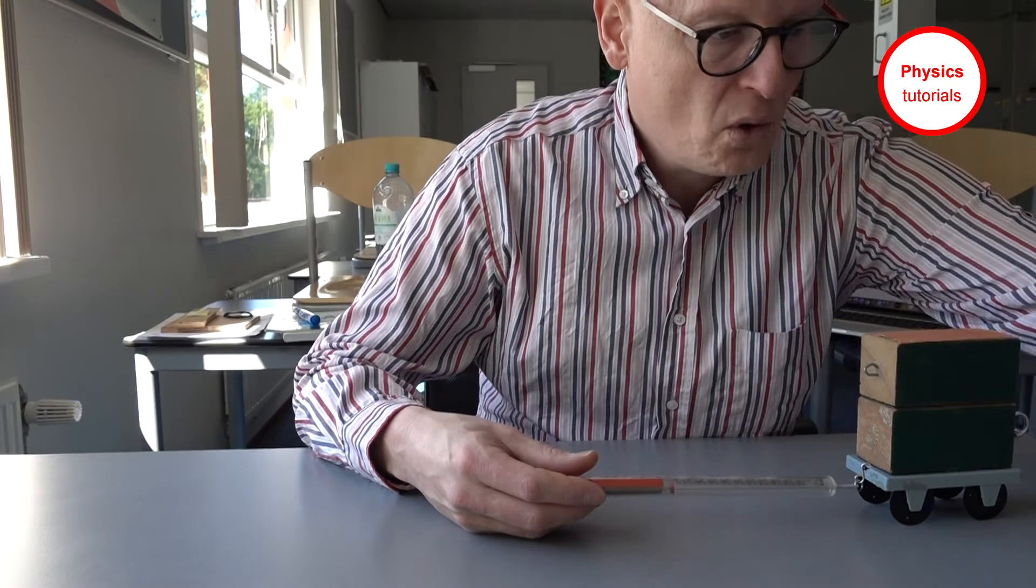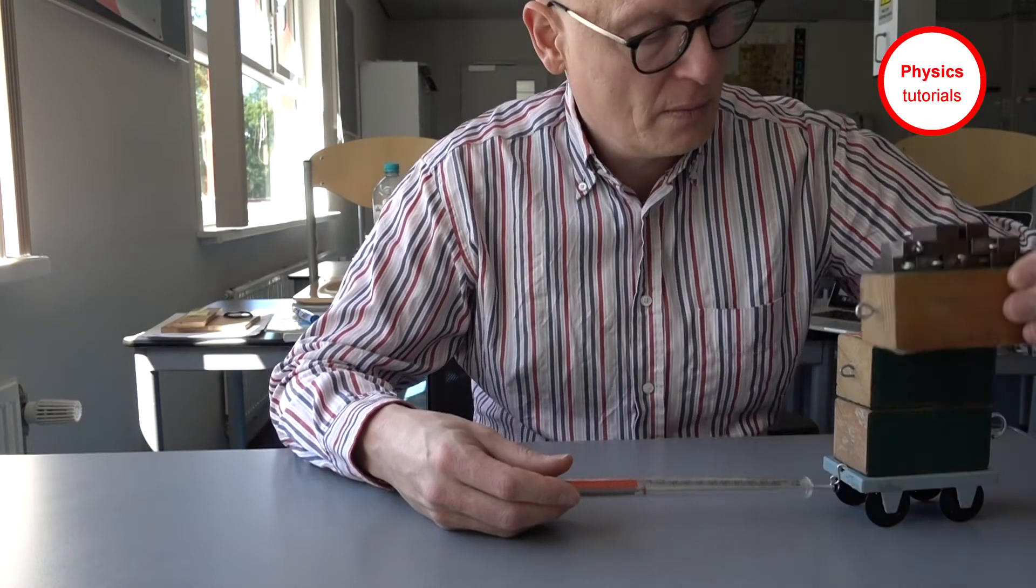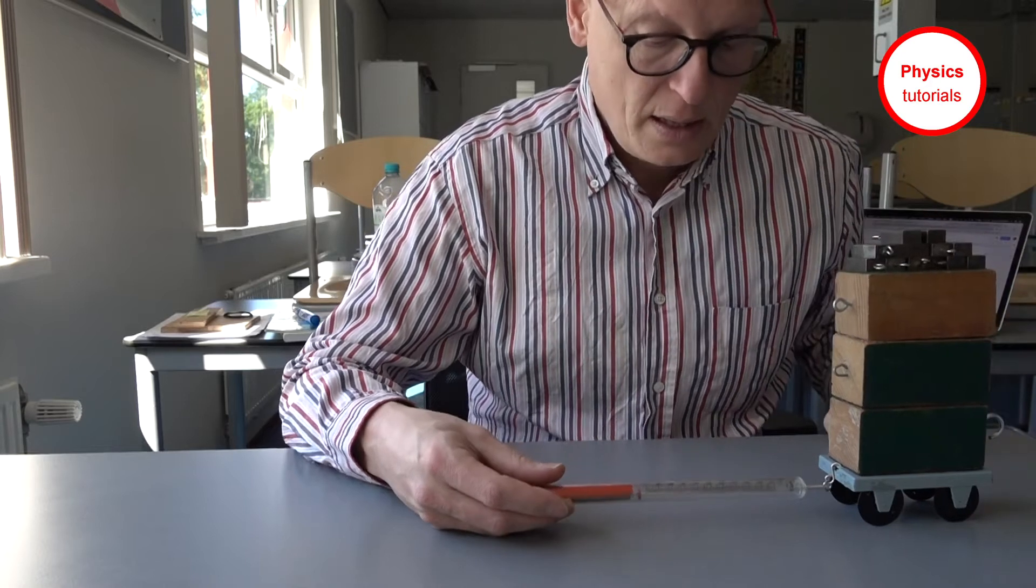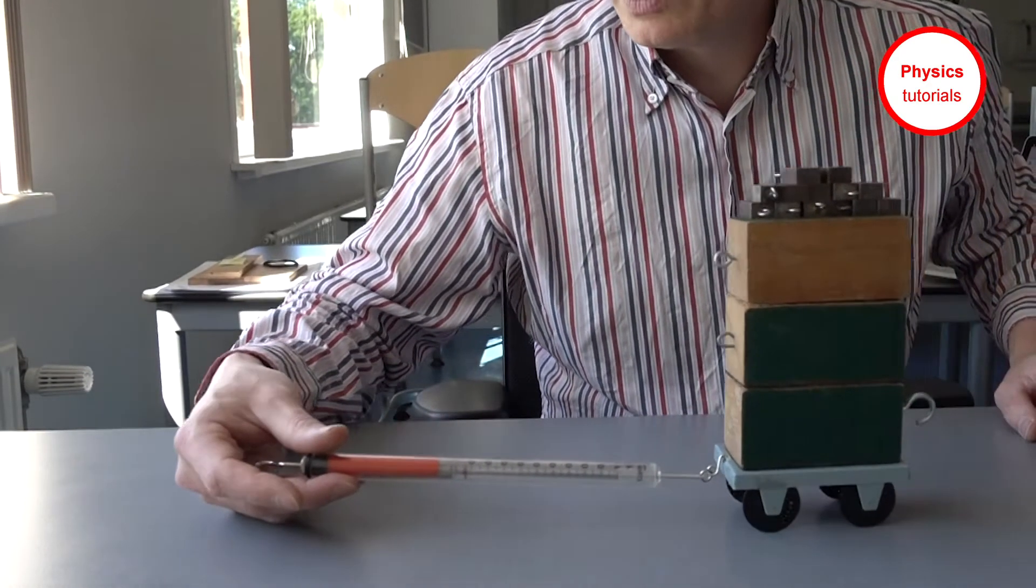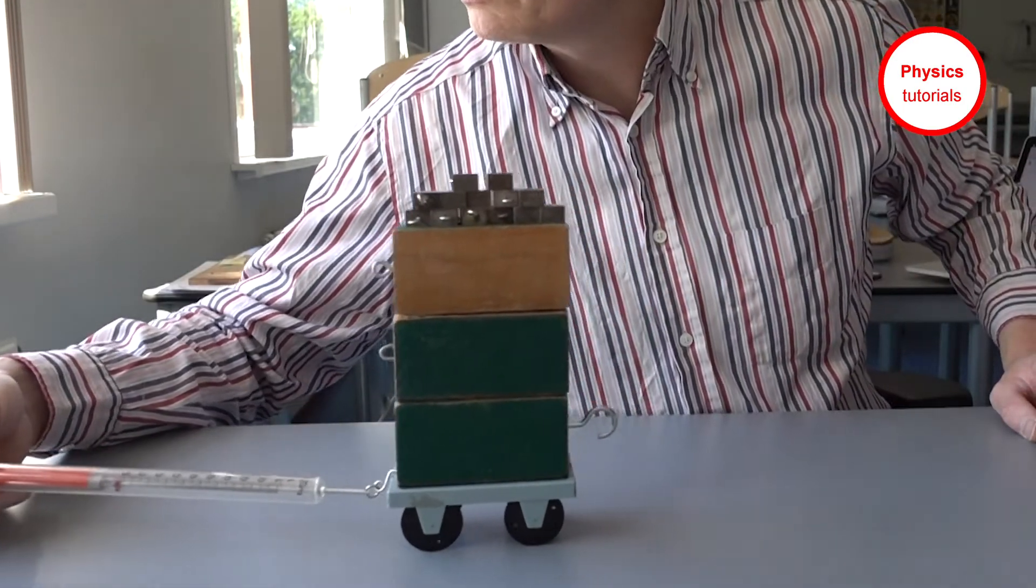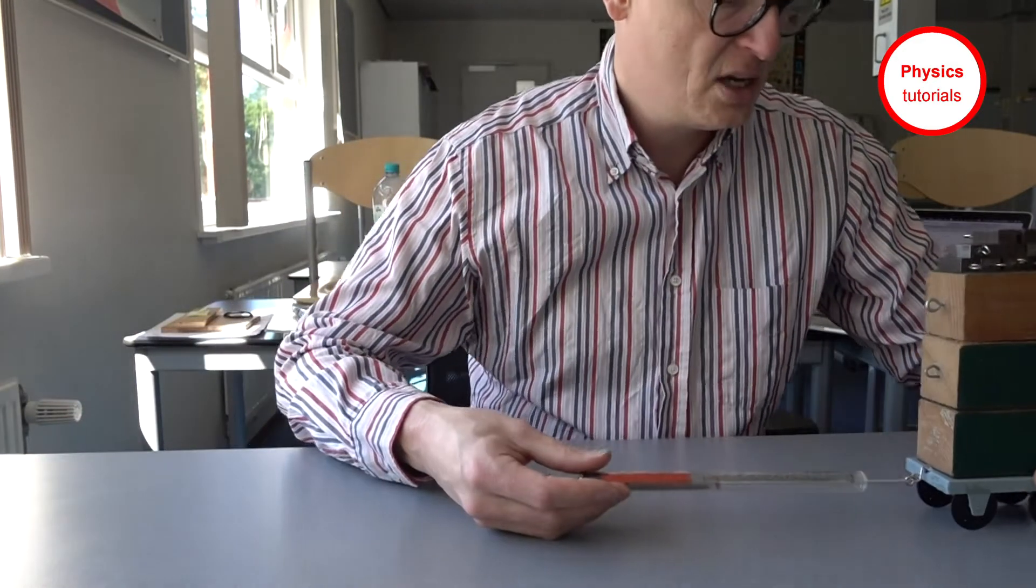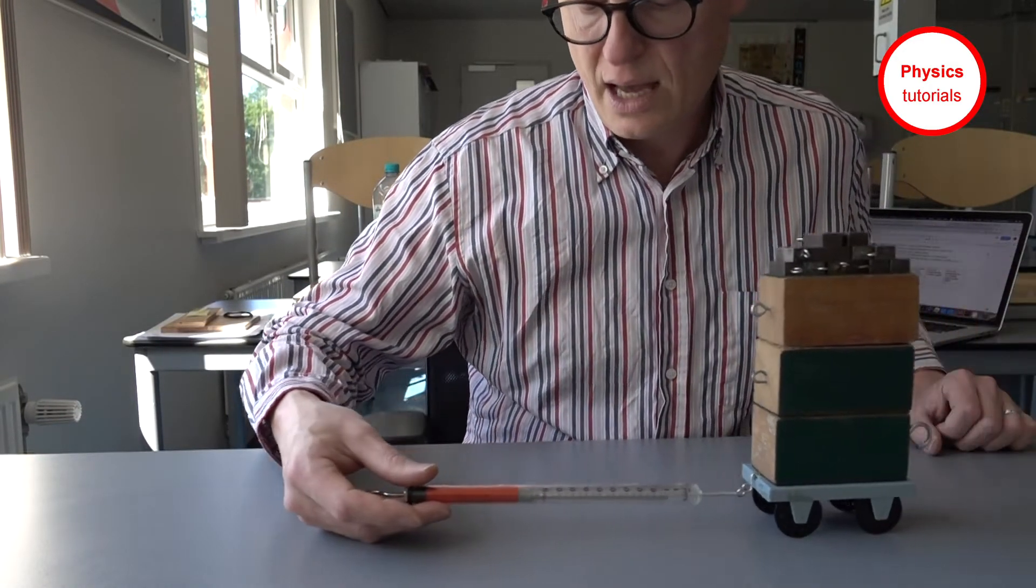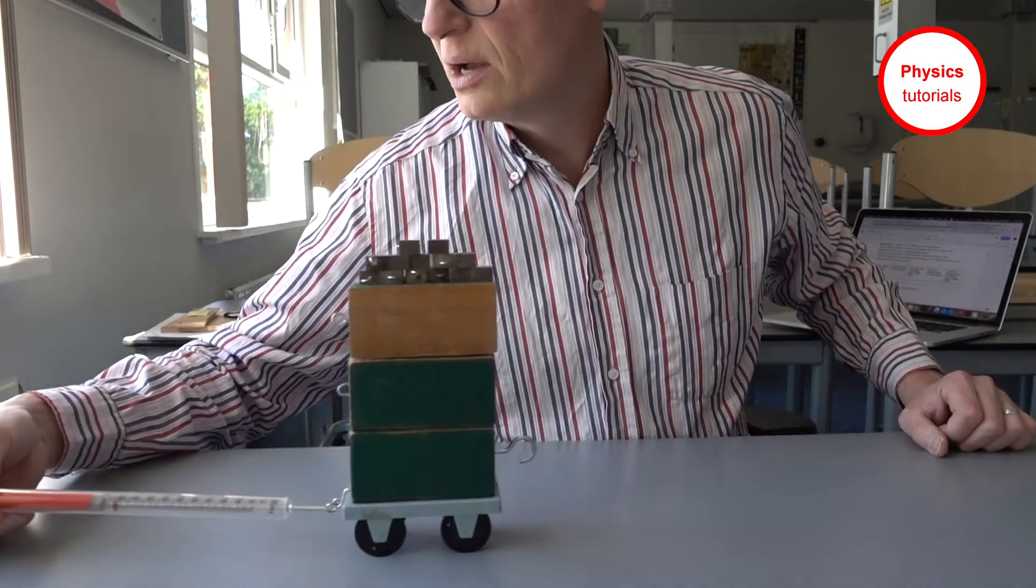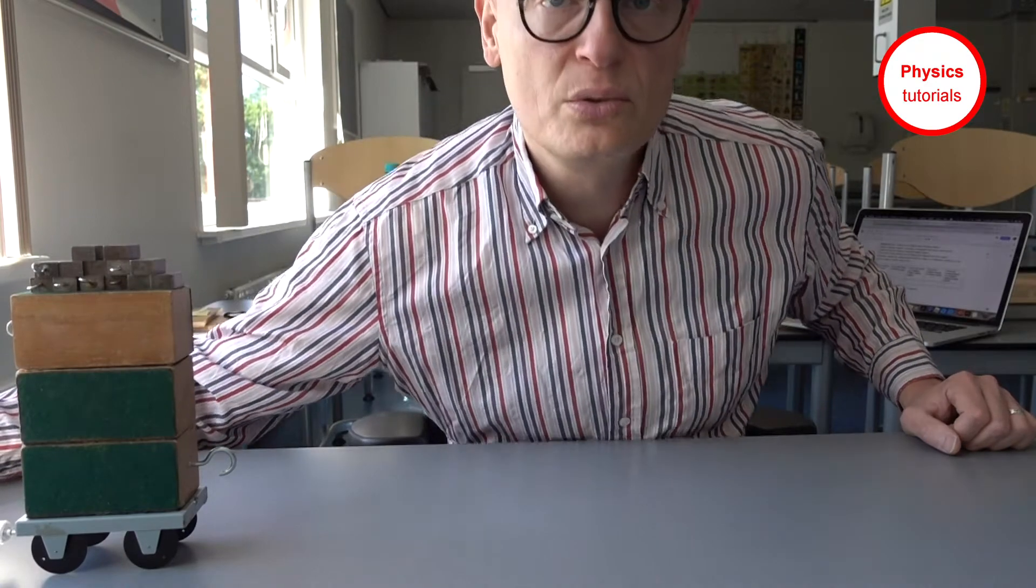When I put more weight on top, then the effect is that at the first speed I measure more, it's 0.14 Newtons, very nice. And at a slightly higher velocity I measure 0.12 to 0.2 Newtons.